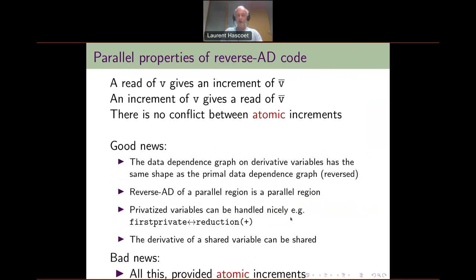Now let's focus on the parallel properties. As we saw, a read of a variable gives an increment of the adjoint variable, and an increment of a variable gives a read of the adjoint variable. The good thing is that just as there is no conflict between reads in a shared memory program, there is no conflict between increments provided they are atomic. This implies a few good things: the data dependence graph on the derivative variables has exactly the same shape as the data dependence graph of the primal program on the primal variables.